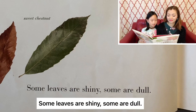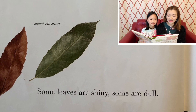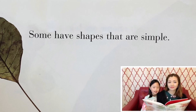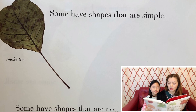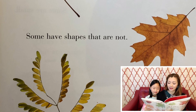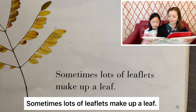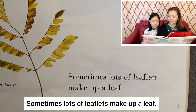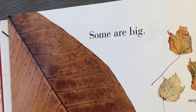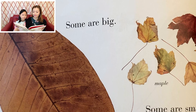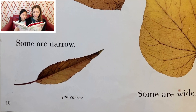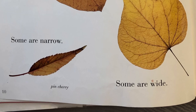Some leaves are shiny, some are dull. 有些叶子很有光泽，有些叶子却很暗淡。Some have shapes that are simple. 有些叶子的形状非常简单。Some have shapes that are not. 有些叶子的形状就没那么简单了。Sometimes, lots of leaflets make up a leaf. 有些时候，很多小的叶子组成了一片大的叶子。Some are big, some are small. Some are narrow, some are wide.